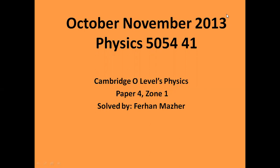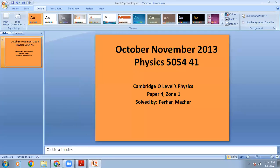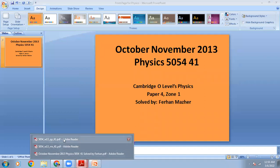Today we have set our heart to solve the ATP paper. We call it Alternative to Practical, also called Paper 4. We have selected October-November 2013, a 4-1 paper. This Paper 4 belongs from Zone 1. The time allowed for this paper is 1 hour. So, let's start this paper — here we go.